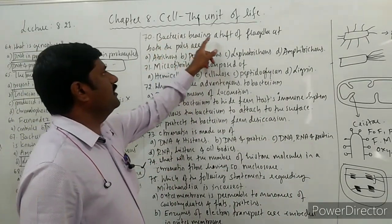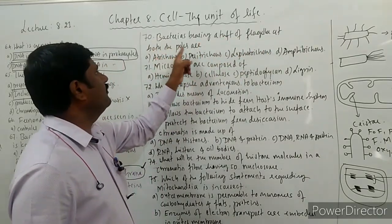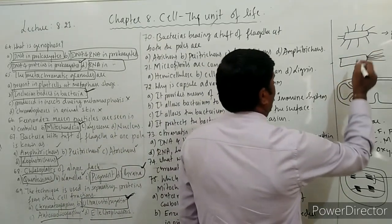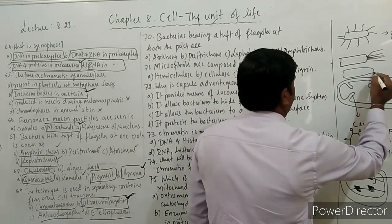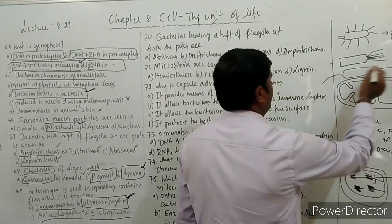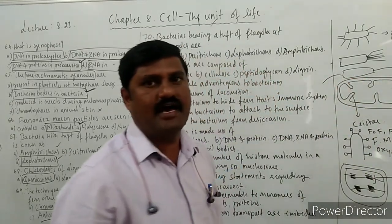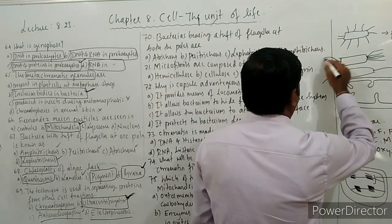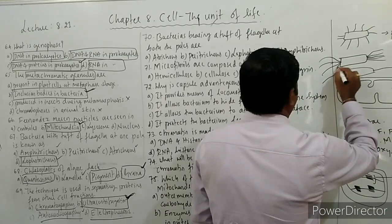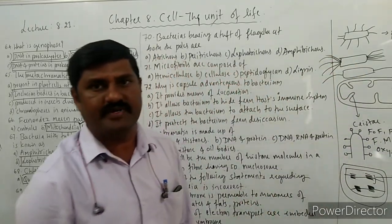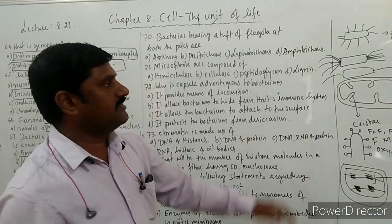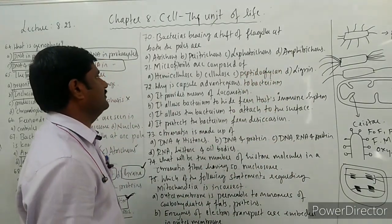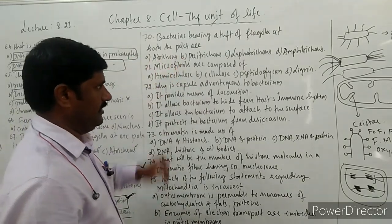Bacteria with flagella on both poles: if a flagellum is present on either pole — a single flagellum or a tuft of flagella on either pole — such bacteria are termed amphitrichous. The correct answer for this question is amphitrichous.